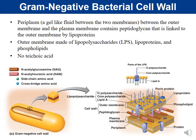The outer membrane of gram-negative organisms has three parts, collectively called LPS or lipopolysaccharides. LPS has an O-polysaccharide, a core polysaccharide, and lipid A. In addition, they also have phospholipids forming a phospholipid bilayer, and lipoproteins that help hold the outer membrane to the periplasmic space.